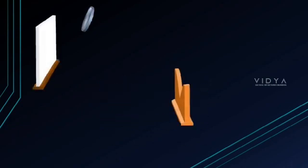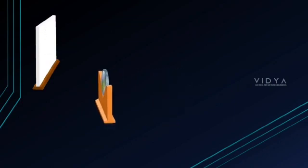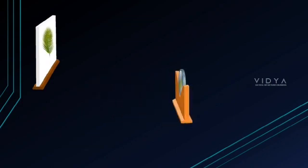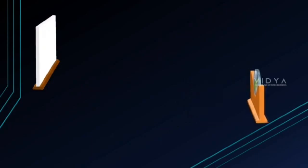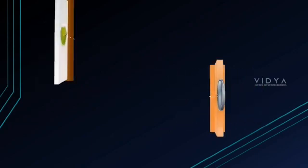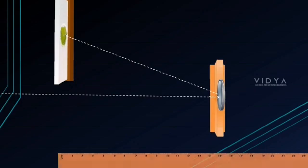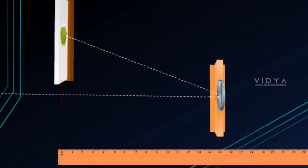First, face the concave mirror toward a distant object. Place the screen on a stand and adjust the mirror until a clear image of the object appears on the screen. Note the distance between screen and mirror - this is taken as the focal length f of the mirror. Let it be 15 cm.